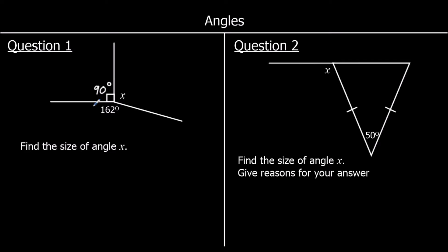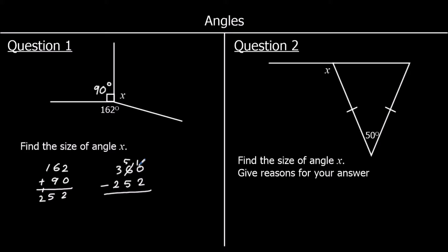So what is the missing angle? If we add 162 and 90, we get 252 degrees. So these two angles add up to 252 degrees. What would we have to add on to that to make 360? We can do 360 take away 252, and that is 108. So X must be 108 degrees because the angles around the point must add up to 360.